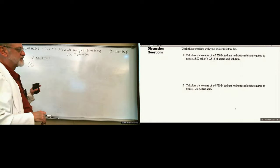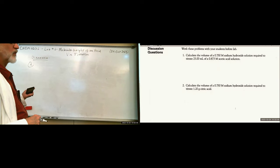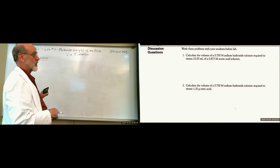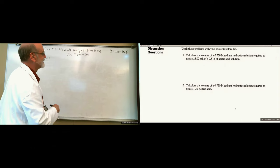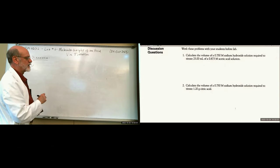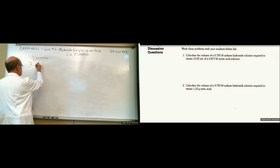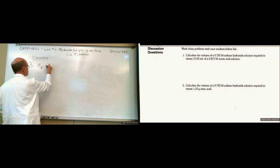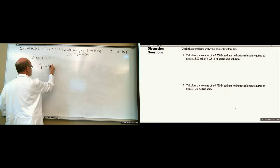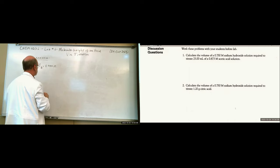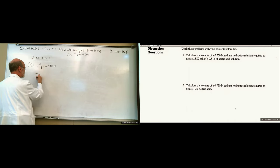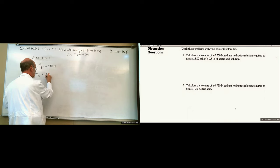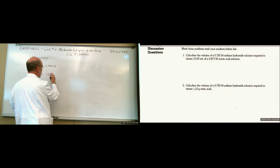Discussion question two: Calculate the volume of 0.750 molar sodium hydroxide solution required to titrate 1.20 grams of citric acid. We have molarity of base = 0.750 molar and mass of citric acid = 1.20 grams.